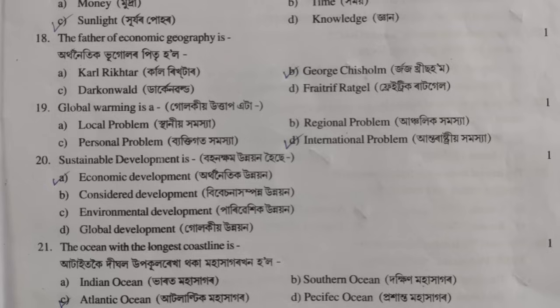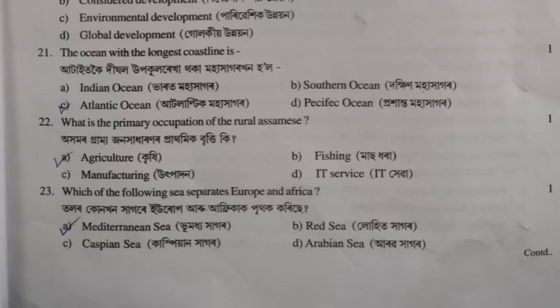Question 19: global warming is an international problem. Question 20: sustainable development relates to economic development. Question 23: which sea separates Europe and Africa? Option A, correct — the Mediterranean Sea.